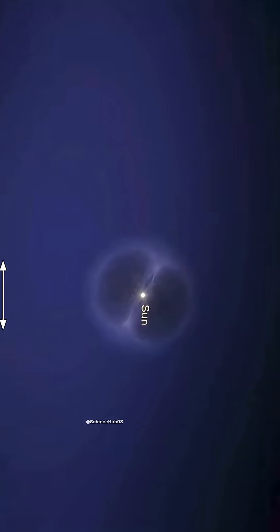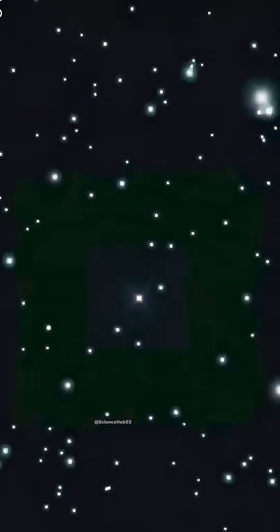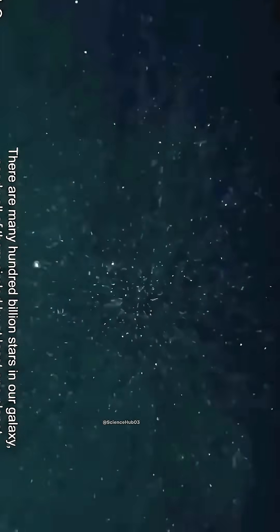The dots you're seeing are millions of stars, each one like our sun, and around every star planets orbit, some of which might even have life.